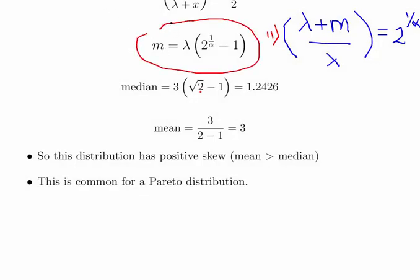Now what we're going to do here is let alpha equal to 2 and lambda equal to 3, and just calculate the mean and the median. So calculate the median is 3 times the square root of 2 minus 1, that gives us 1.2426. The mean is 3 divided by 2 minus 1. Again, just to go up above, that is lambda divided by alpha minus 1. So that gives us 3.